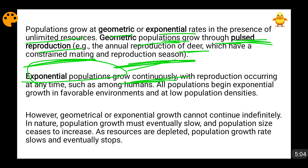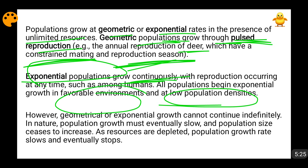Both the exponential and geometric rates of growth will happen when two or three conditions are fulfilled: first, low population density — if population densities are low, there is scope for a greater number of individuals, so obviously population will grow; second, a very favorable environment; and third, a high or unlimited availability of resources. Under these three conditions, the rate of growth of the population will be very high.